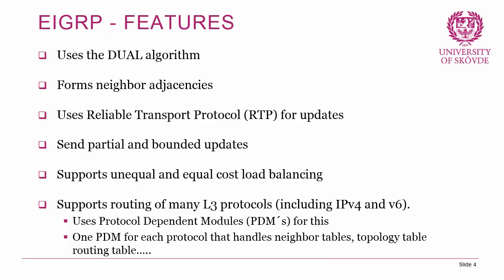To send routing updates, EIGRP does not use TCP or UDP; instead it uses the Reliable Transport Protocol (RTP). This is the method EIGRP uses to be protocol-independent, so it can support routing for IPv4, IPv6, as well as legacy Layer 3 protocols like AppleTalk and IPX.